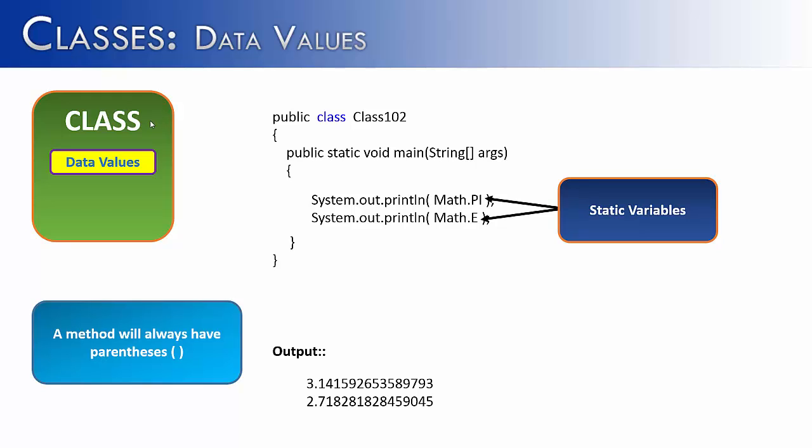You wouldn't want one person to use pi and the value to be 3.14159 and another person to use it and somebody decided to change it to 1.8. But rather you want them as constants and so that's exactly what they are in the class. They're not only data values but they're static constant variables inside of the math class.